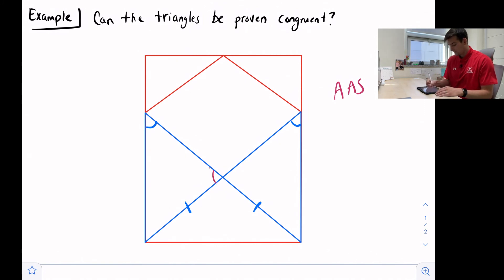So if we look, we have this angle here and this angle right here that would be congruent. And so now we have angle-angle-side, and so now we can say yes, these two triangles can be proven congruent because of angle-angle-side congruence theorem.